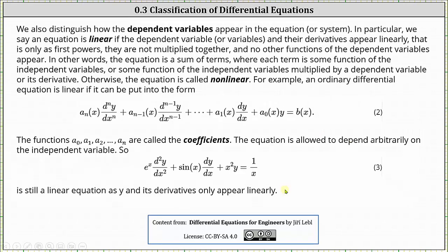We also distinguish how dependent variables appear in the equation or system. An equation is linear if the dependent variable or variables and their derivatives appear linearly — that is, only as first powers. They are not multiplied together and no other functions of the dependent variables appear. In other words, the equation is the sum of terms where each term is some function of the independent variables, or some function of the independent variables multiplied by a dependent variable or its derivative. Otherwise, the equation is called nonlinear.